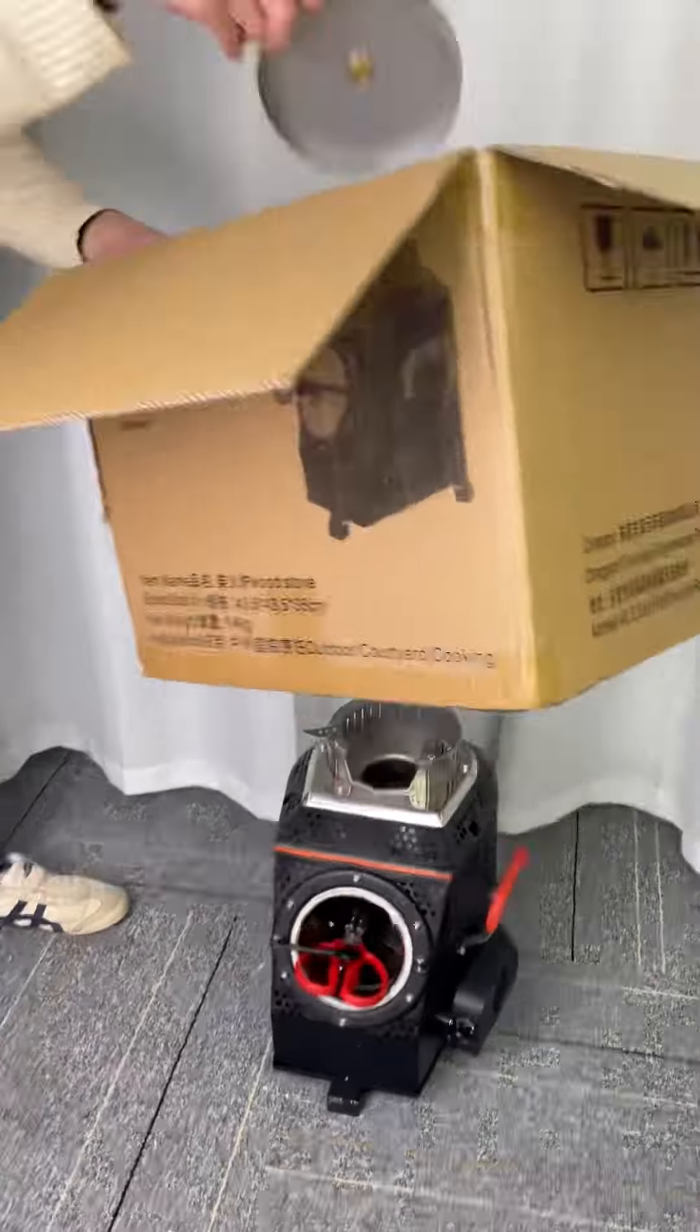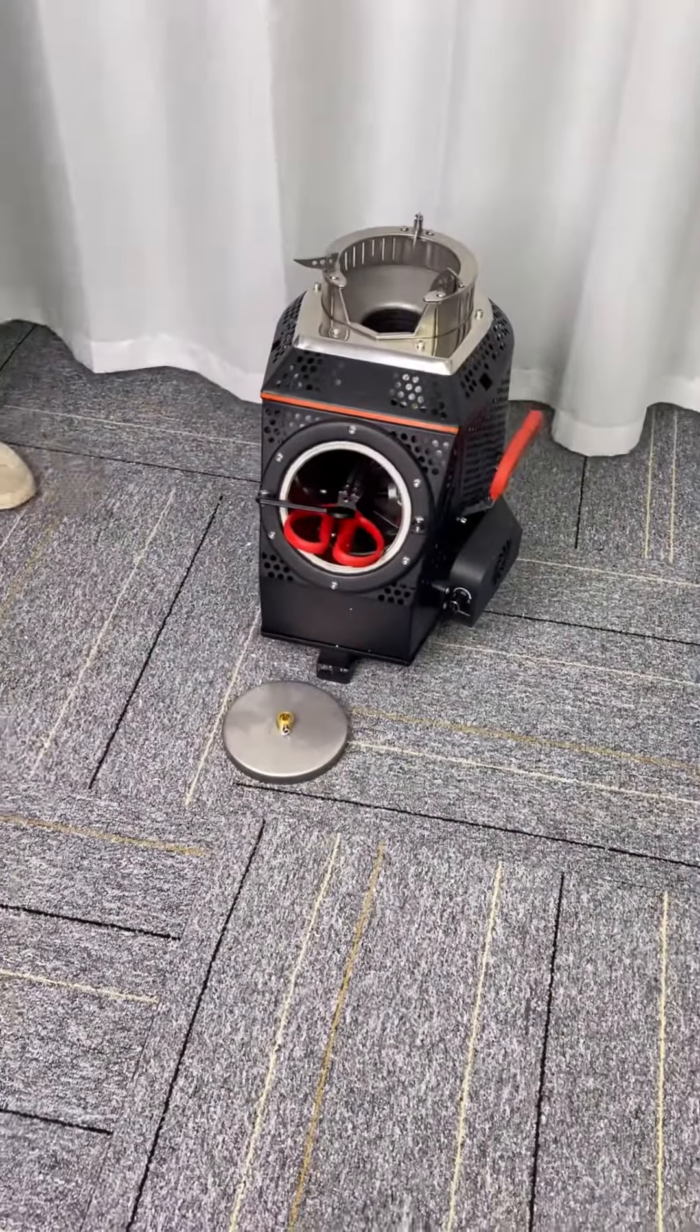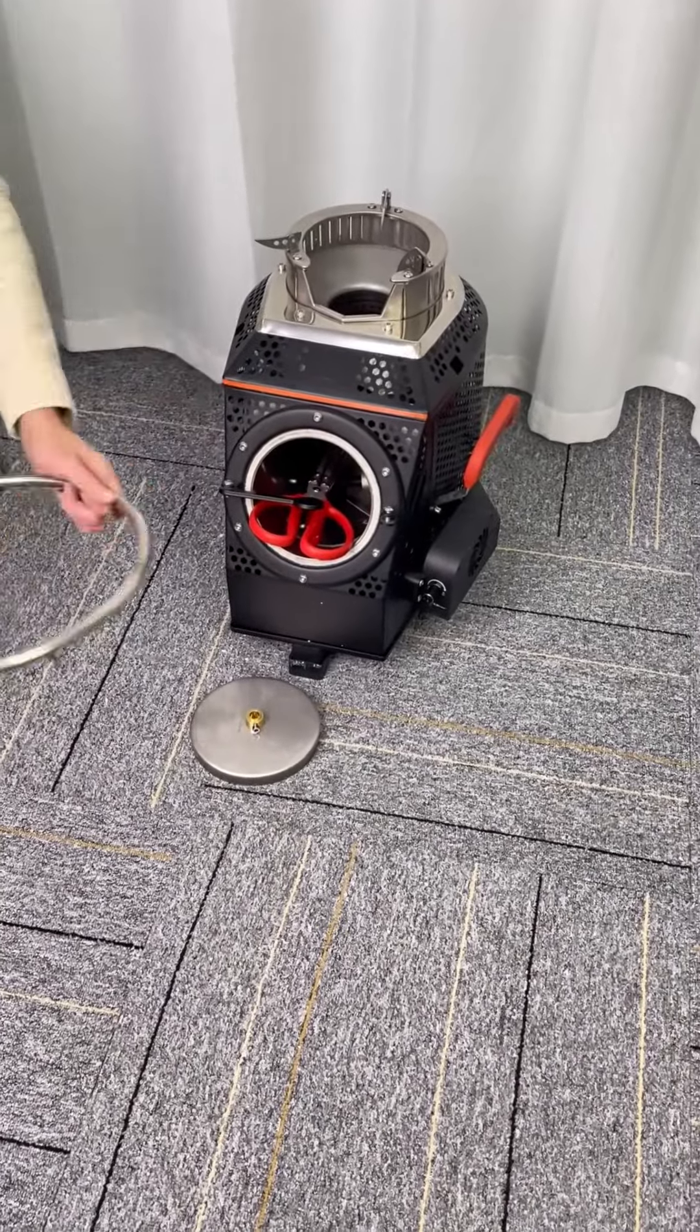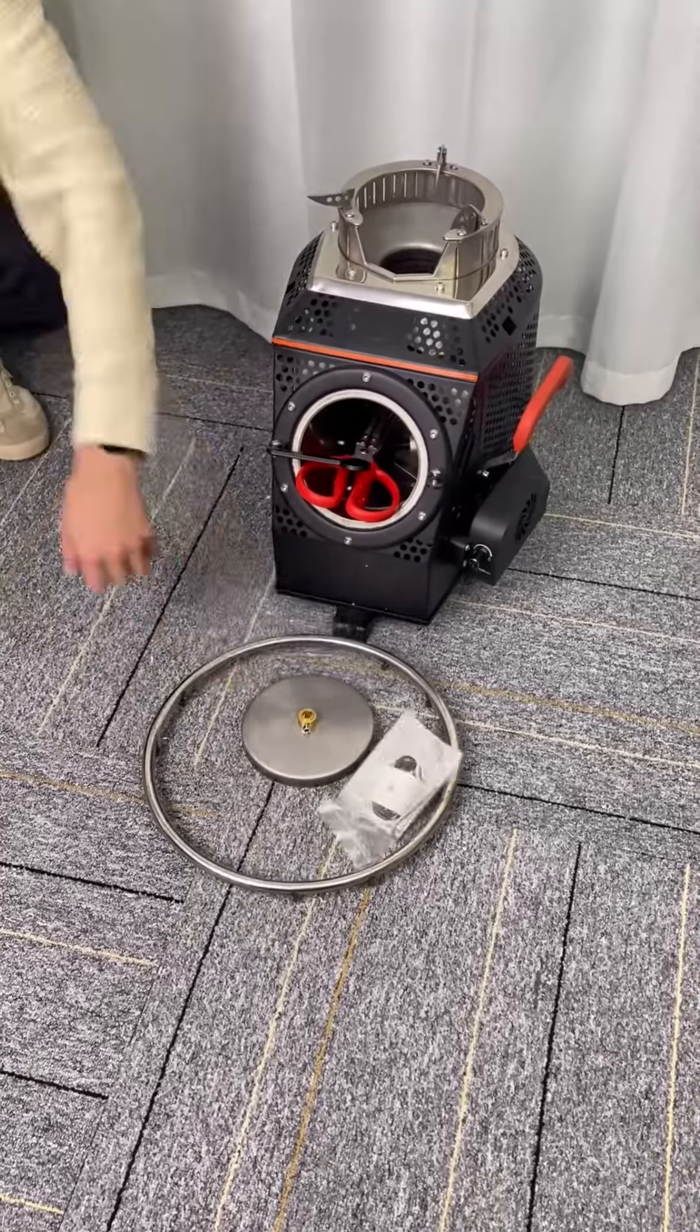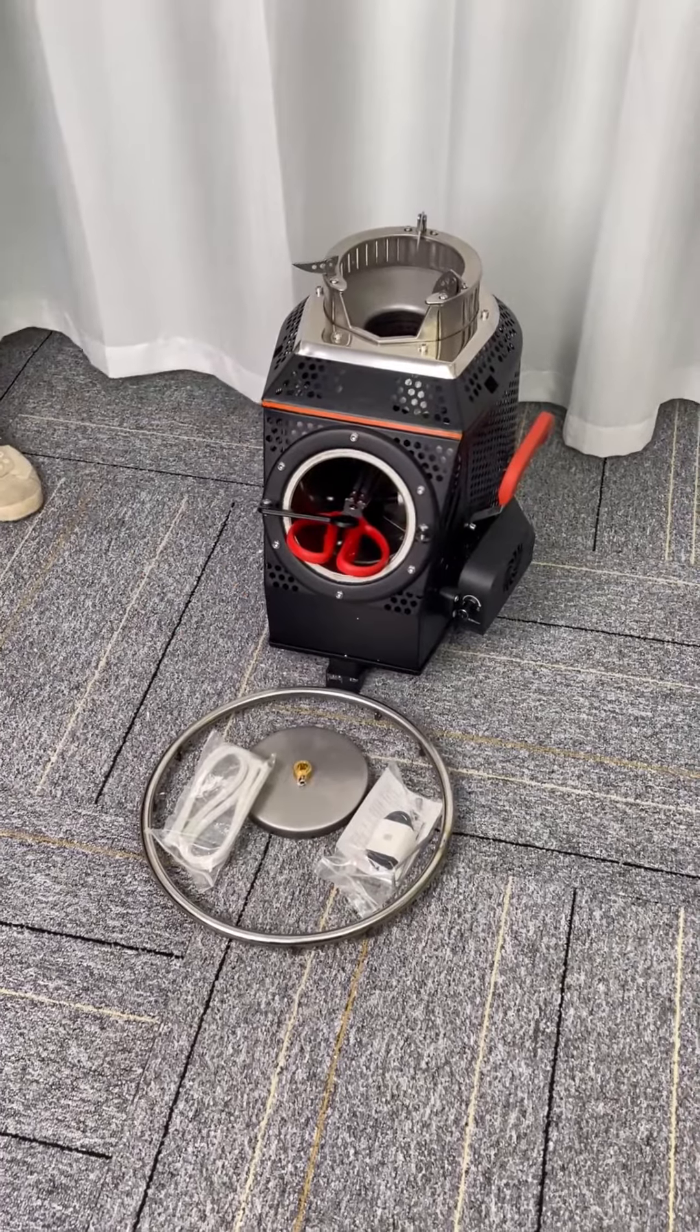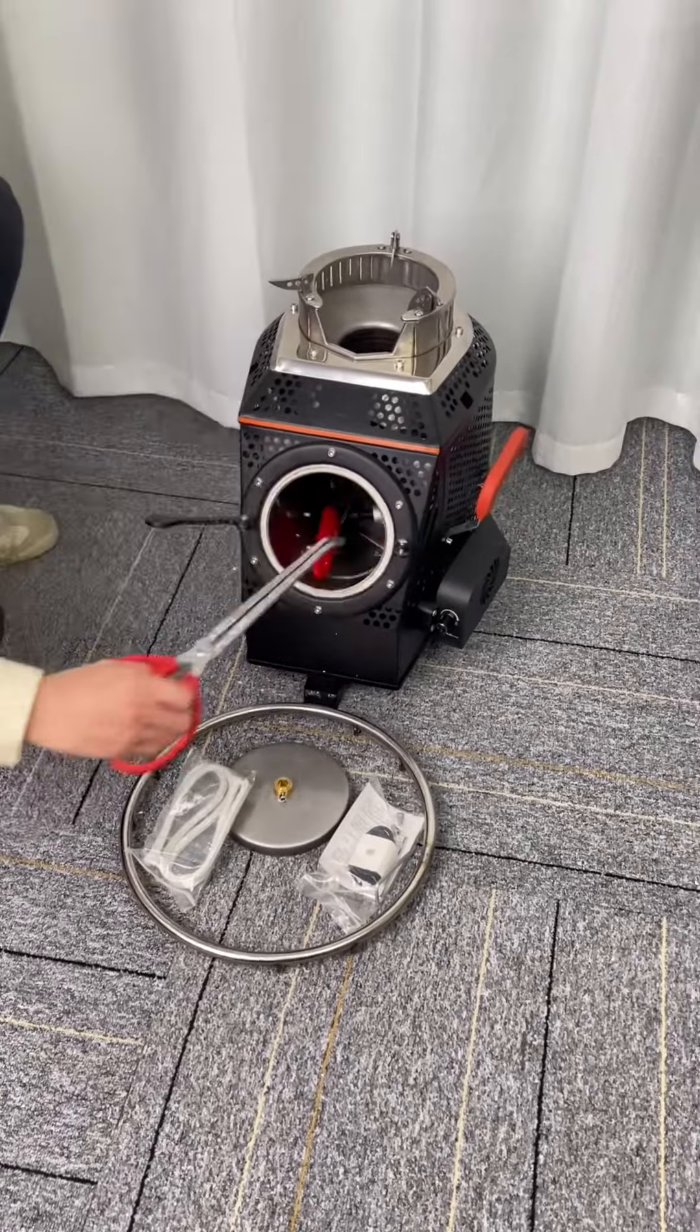There's also a stove door assembly inside. Next we check the accessories. Furnace door component. This is the pot rack ring. This is the accessory bag. Fire resistant cotton.